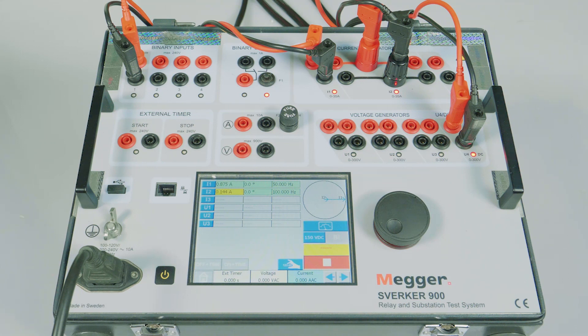Hence, the ratio CT2 divided by CT1 equals 0.144 divided by 0.875, equals 15%. Let me switch off the test kit.